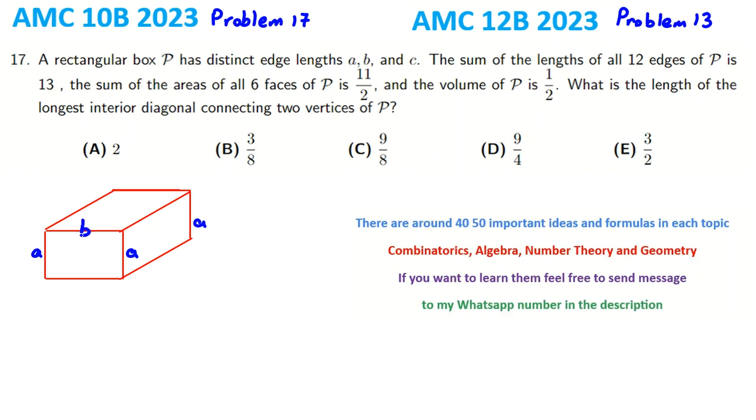This one is a, this one b, and this one c. The problem says the sum of lengths of all 12 edges of P is 13. There are four a's, four b's, four c's, so 4(a+b+c) = 13.